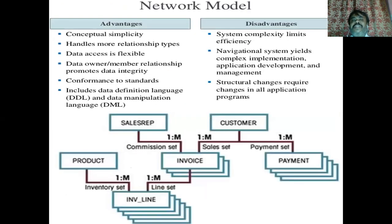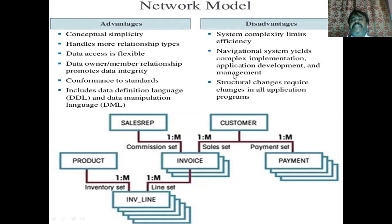The network model basically supports one-to-many as well as many-to-many relationships. It is conceptually simple but much more robust than the hierarchical model. However, system complexity limits efficiency and structural changes are not handled in an optimal manner.